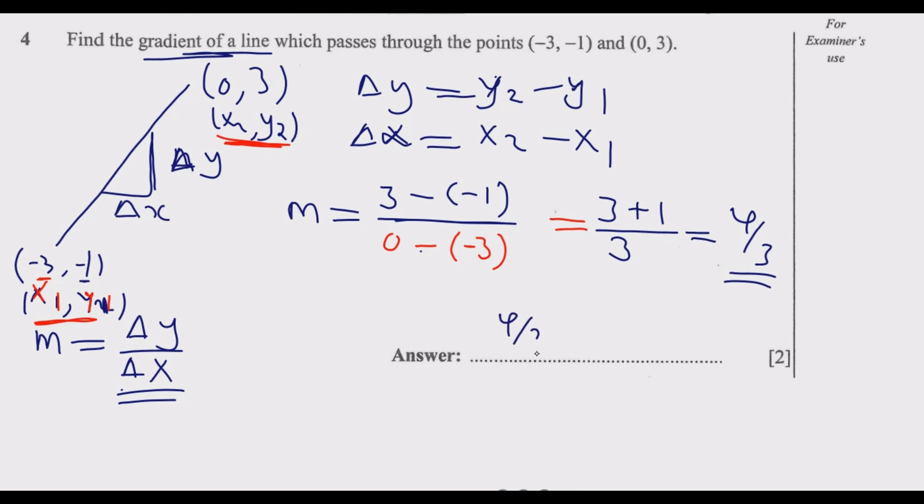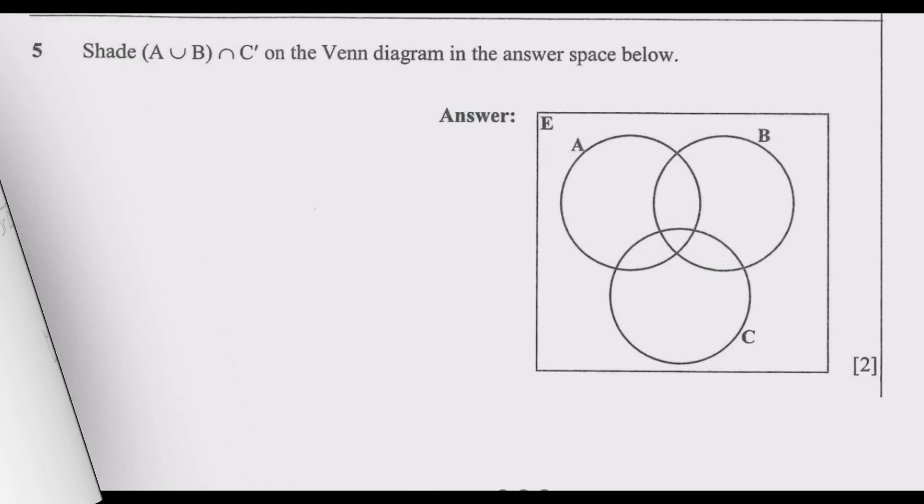So 4/3 is the gradient of the line that passes through these two points. Once you do that, you are good to go. You can say 4/3 or 1 and 1/3, either of these will still be correct.